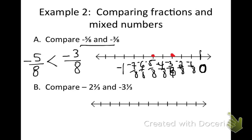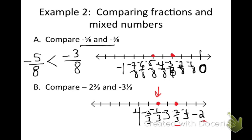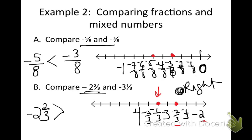Now I want to compare negative 2 and 2 thirds and negative 3 and 1 third. I'll start my number line at negative 2 and divide it into thirds: 1 third, 2 thirds, 1, and 1 third — going all the way to negative 4. I'll put a dot on negative 2 and 2 thirds, and then on negative 3 and 1 third. Negative 3 and 1 third is more to the left, so negative 2 and 2 thirds is greater than negative 3 and 1 third. Using the number line, I can easily see the answer.